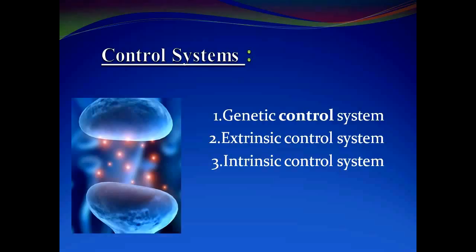This is the second part of our presentation on homeostasis control systems. There are basically three control systems: genetic control system, extrinsic control system, and intrinsic control systems.